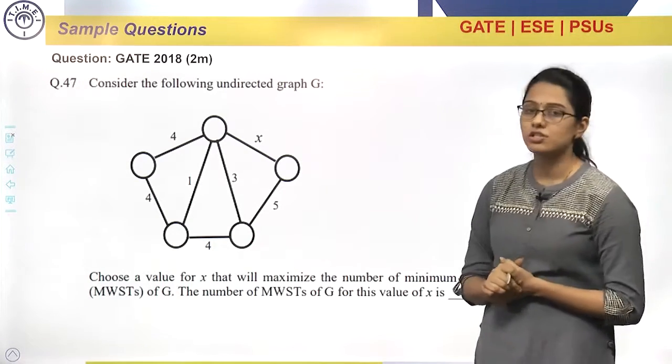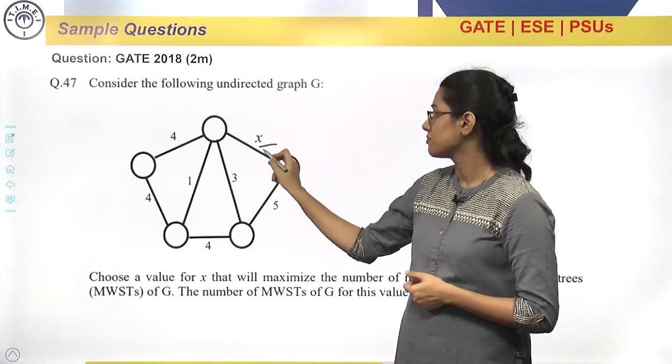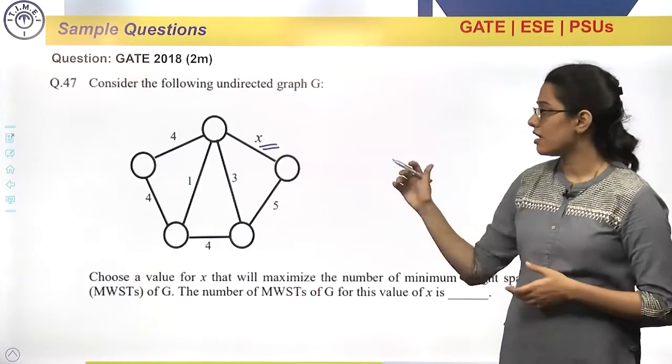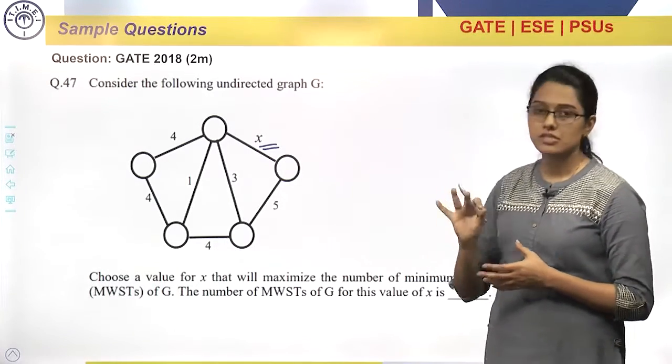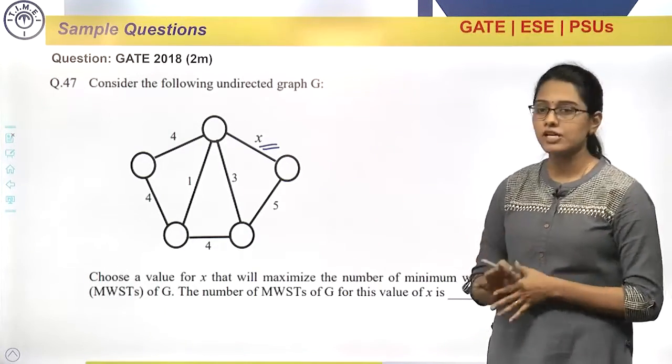Now, read the question carefully. Only one value is missing, that is x. So what we are habituated with, whenever we see some unknown x, we will see like we have to find the value of x and we have to fill it.